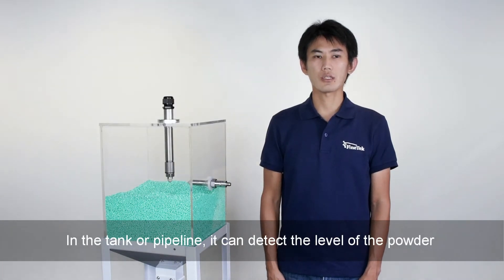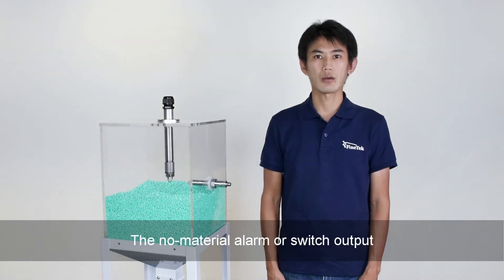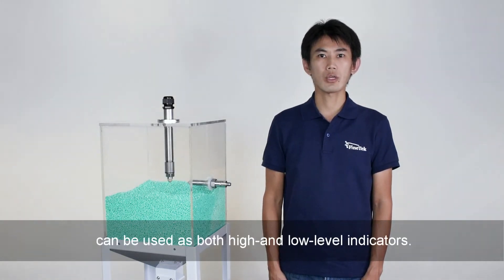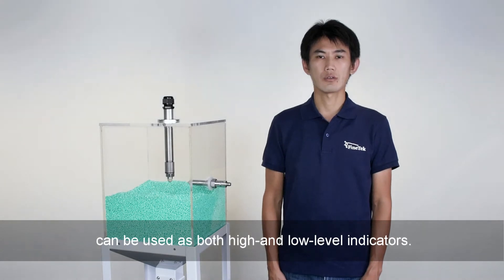In a tank or pipeline, it can detect the level of the powder or other granular medium. The no material alarm or switch output can be used as both high and low level indicators.